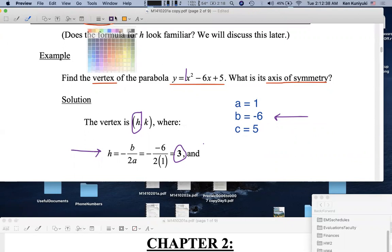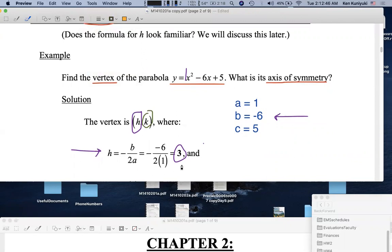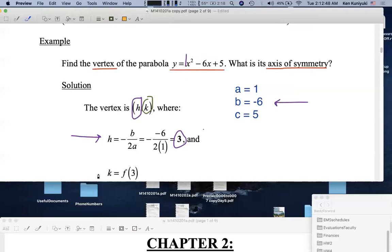What do we do to find the y-coordinate? Y-coordinates are function values. You work out f of 3. The y-coordinate, k. If it helps, you can think of y as being the k here, y as being k here, and x is h over here.